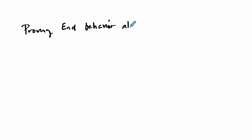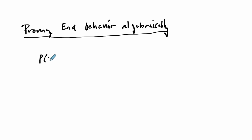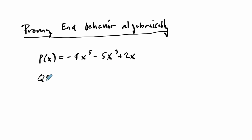We're talking about proving end behavior algebraically. We'll look at this on a case-by-case basis. For example, how would you prove that the polynomial p(x) = -4x⁵ - 5x³ + 2x has the same end behavior as q(x), which is just the leading term: q(x) = -4x⁵? These two polynomials have the same degree and the same leading coefficient, but nothing else is the same.